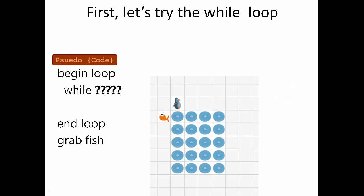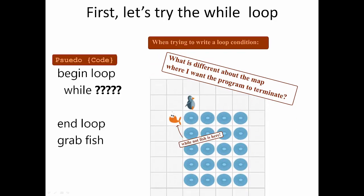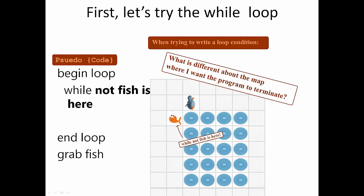First we have to start with the while statement, or the condition we'll use for our loop, which in this case could easily be, well, there's no fish here. So going from there, we have to figure out how we're going to layer our if statements.